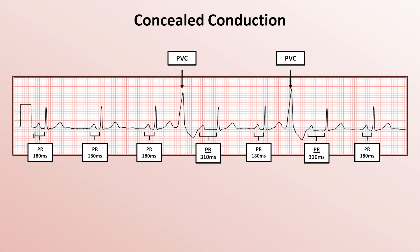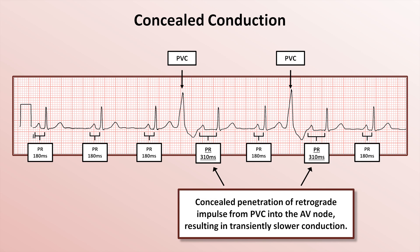So is this patient developing intermittent first degree AV block? No. What's occurring here is that a retrograde impulse from the PVC is traveling up the His-Purkinje system back into the AV node, where partial depolarization takes place, but the impulse ends there — it does not continue into the atria or back to the sinus node. So the next sinus P wave occurs on time, but when that impulse reaches the AV node, it's still partially refractory from the preceding PVC. Thus there is a greater delay in the antegrade sinus beat's forward propagation, which manifests on the EKG as transient PR prolongation. The penetration into the AV node of that retrograde impulse from the PVC is referred to as concealed, because its existence can only be inferred by subsequent electrical activity — in this case, a prolongation of the PR interval.